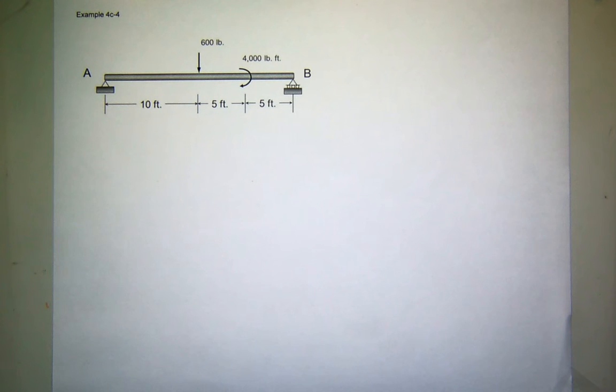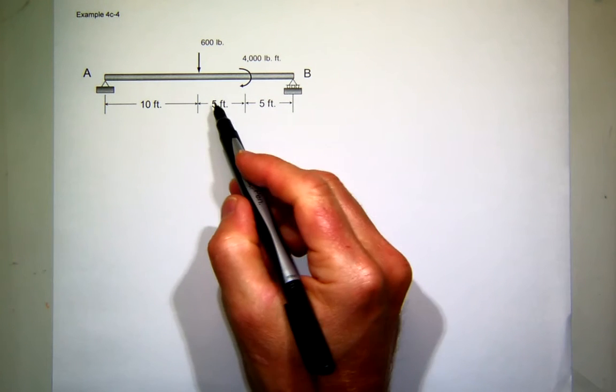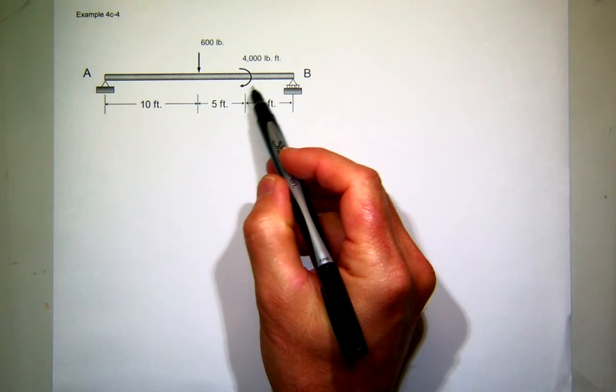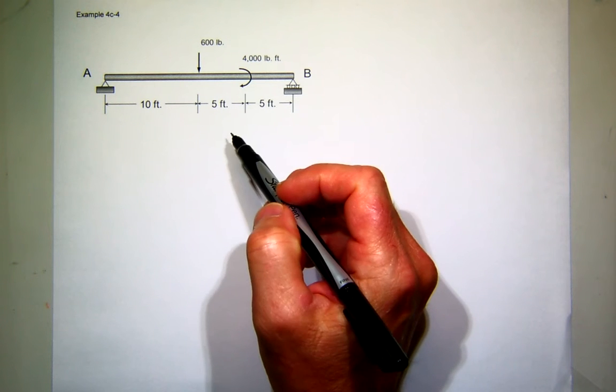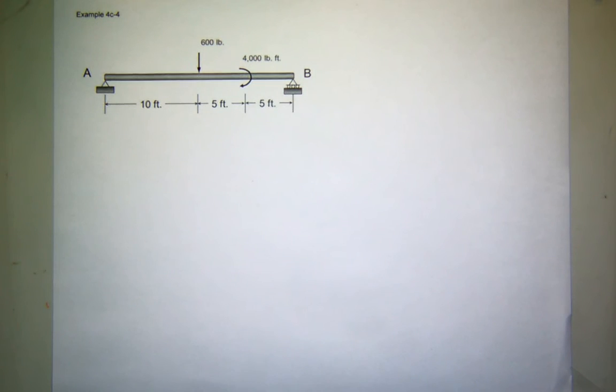Okay, so here's a problem. We're going to draw the shear moment diagram for this one. This one's not very sophisticated, but I did want to go over one that had an applied couple and show how that affects the shear moment diagram.